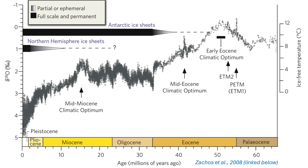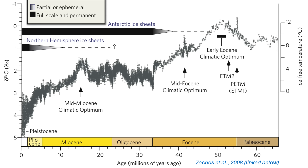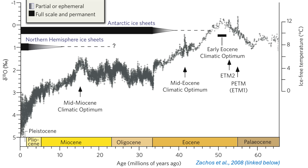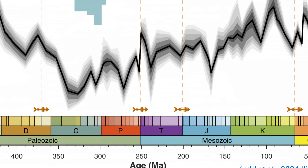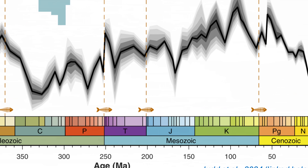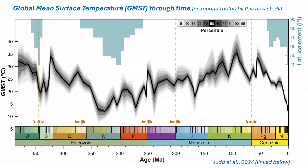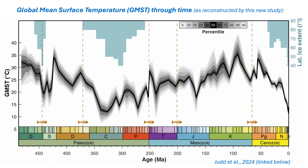Studying how temperatures have changed in the past also helps scientists pin down what we call the climate sensitivity, telling us how hot we can expect the world to get in the future, depending on what we get up to over coming decades. So studying our ancient climate isn't just fascinating, it's also fundamentally important. But for a long time, our go-to ancient temperature record was from a 2008 study — the famous Zakos curve — which only went back about 66 million years.